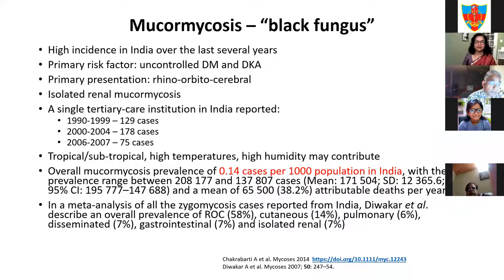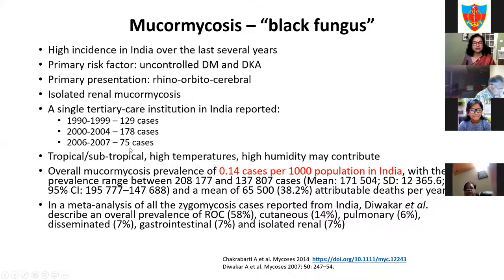Mucormycosis has become a huge problem for those dealing with patients in India. The incidence in India has been higher than many other parts of the world. The primary risk factor seems to be uncontrolled diabetes and DKA. The primary presentation is rhinoorbital cerebral mucormycosis. Between 1990 and 2007, a single tertiary care institution in India saw a significant number of cases. The reasons are unclear but may relate to temperature and humidity. Pre-COVID prevalence was estimated at about 0.14 cases per 1,000 population in India.